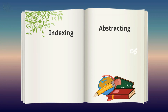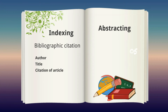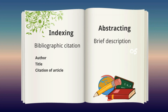Indexing includes bibliographic citations where you can find the author, title, and citation of the article. Abstracting, on the other hand, provides a brief description about the primary literature.